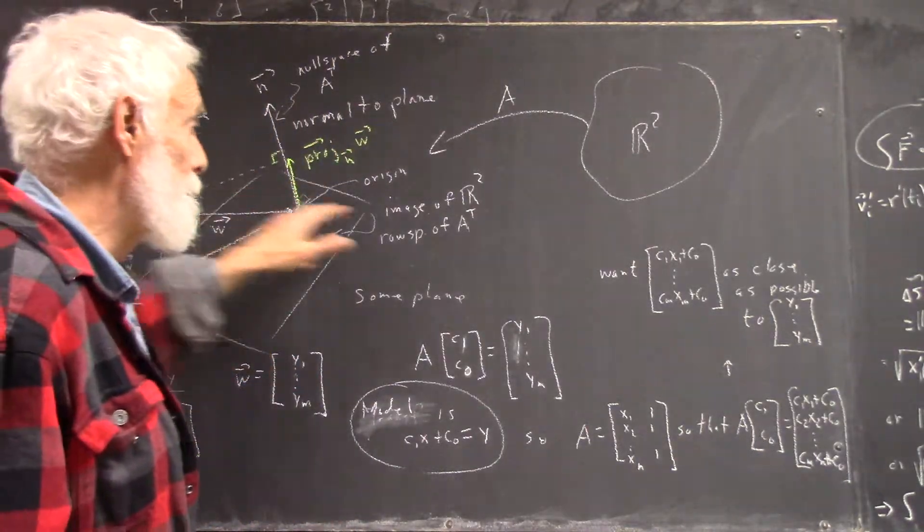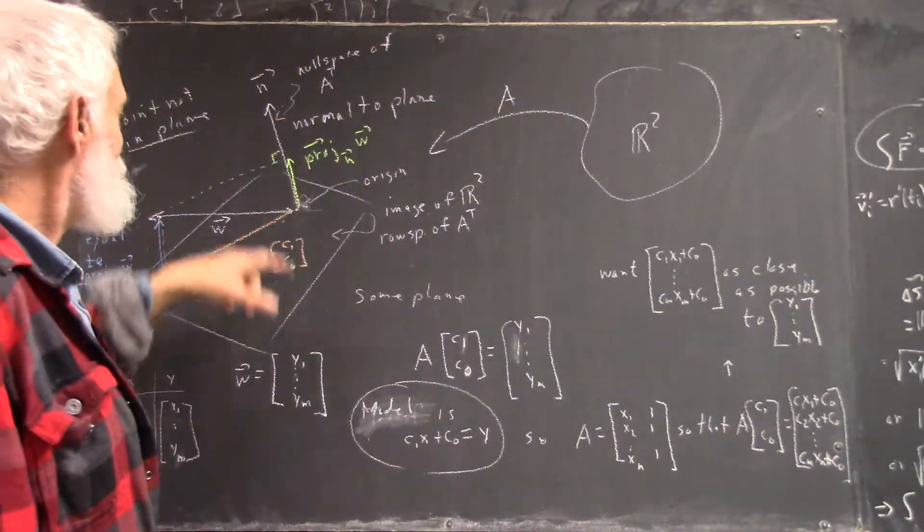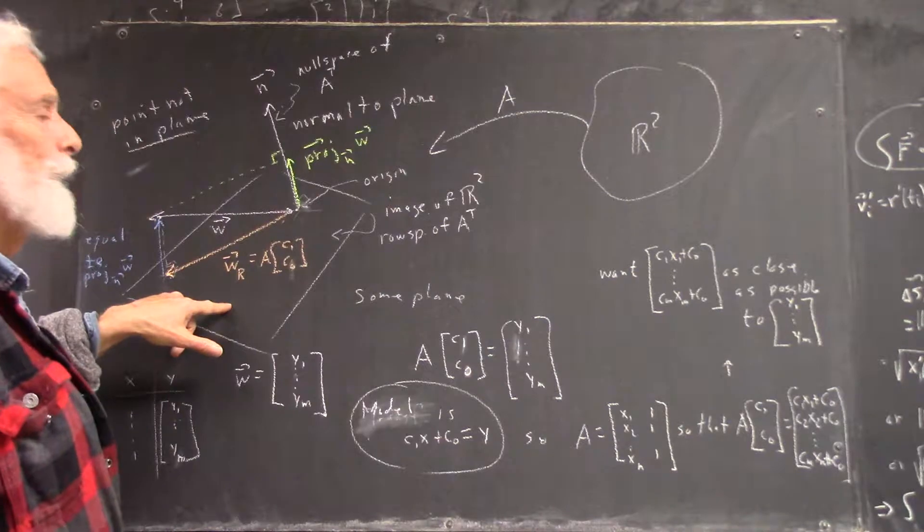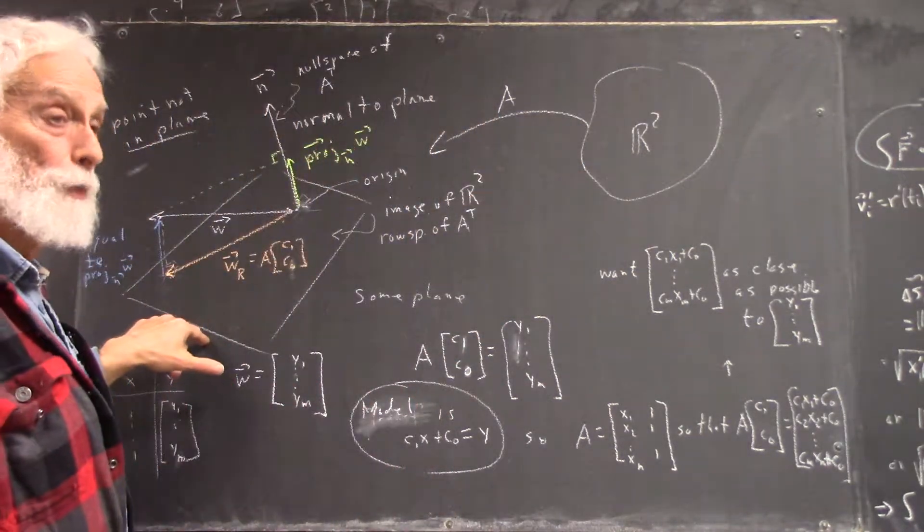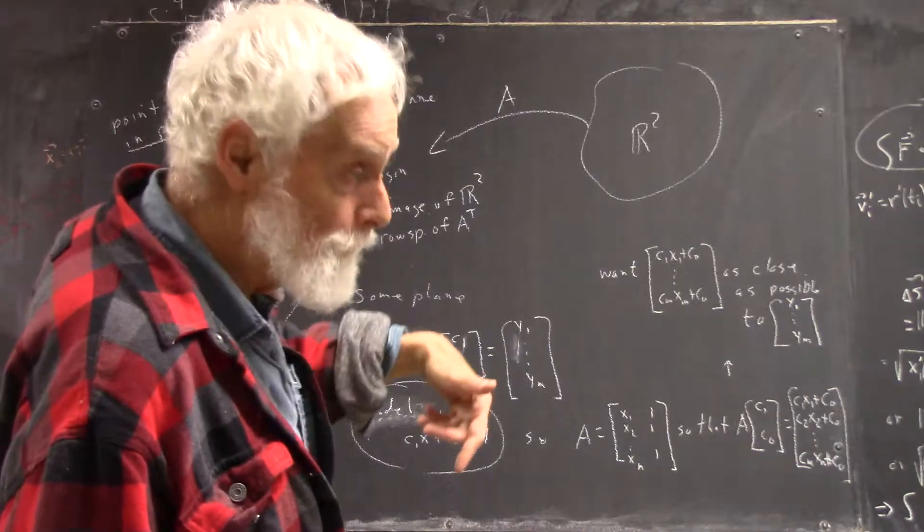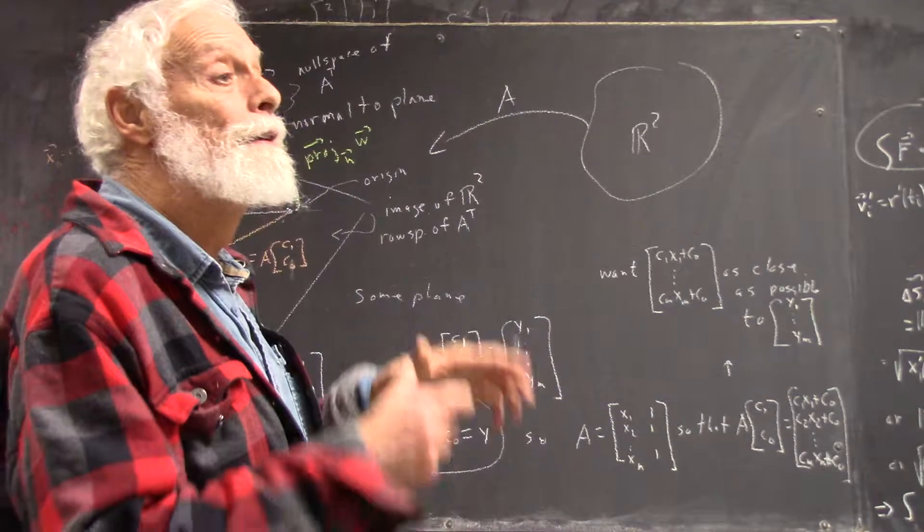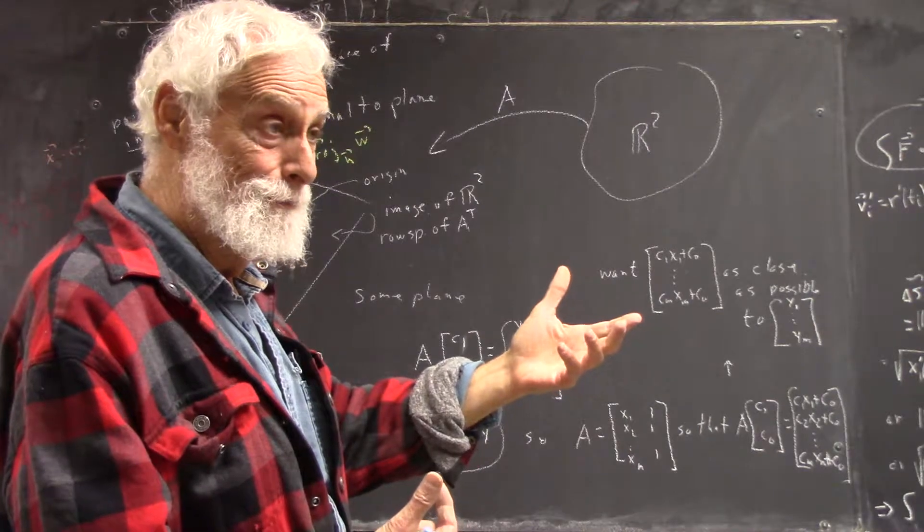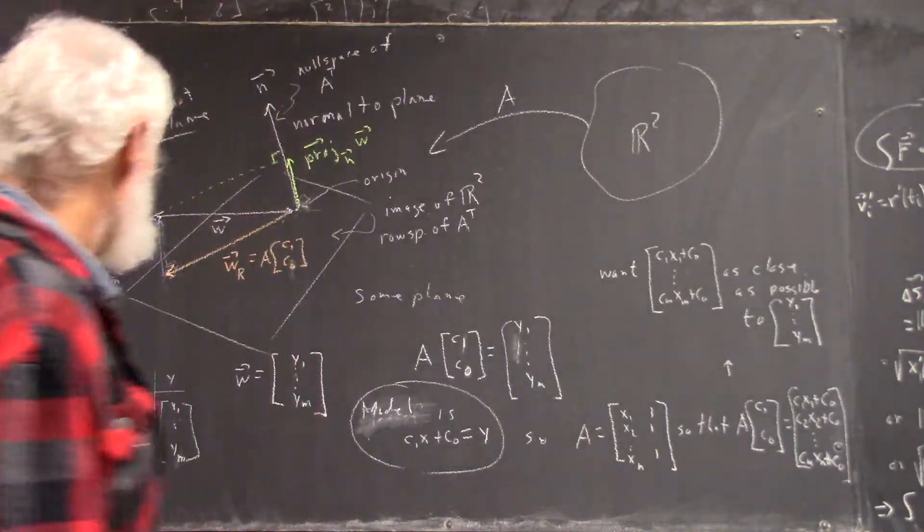And not null space of what? Not the null space of the transformation. Null space of the transpose. The space that's perpendicular to the image space. Because the image space is the column space of A, which is the row space of A transposed. And any vector space breaks into direct sum of the row space and the null space. We've verified that as soon as we did orthogonality.